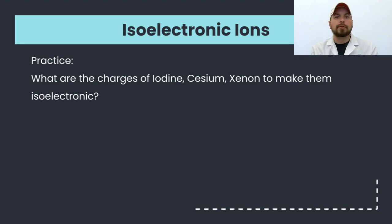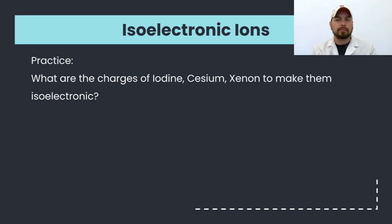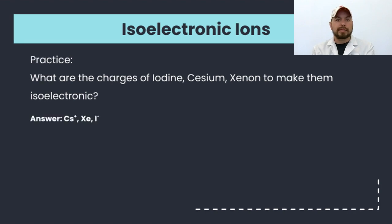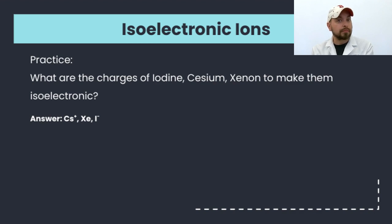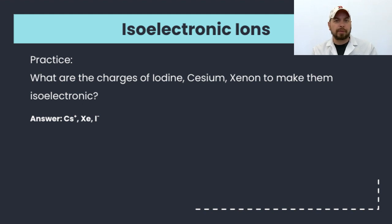What would it take for iodine, cesium, and xenon to become isoelectric to each other? Cesium is in the alkali metal group, so it's going to lose one electron to become isoelectric to xenon. Iodine, which is a halogen, is going to gain one electron to become isoelectric to xenon. Xenon, being a noble gas, will not readily gain or lose any electrons — we'll talk more about why later.